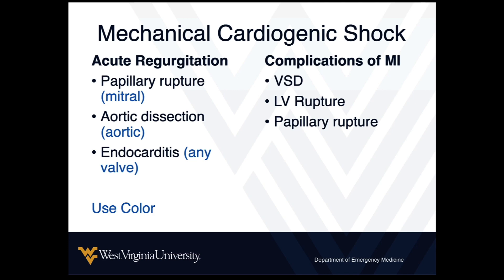We'll look at using color. If you have a little bit of suspicion, throw color across the valve. If you're earlier in your stage of learning ultrasound, after you feel pretty good about getting your normal views, start practicing putting color on the mitral and aortic valve and get your eyes accustomed to what the normal color pattern looks like throughout the cardiac cycle. MI complications are typically accompanied by regional wall motion abnormalities.